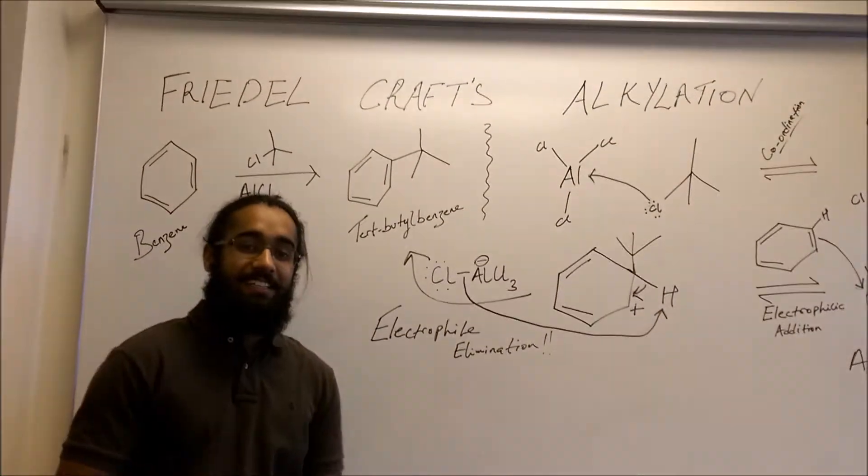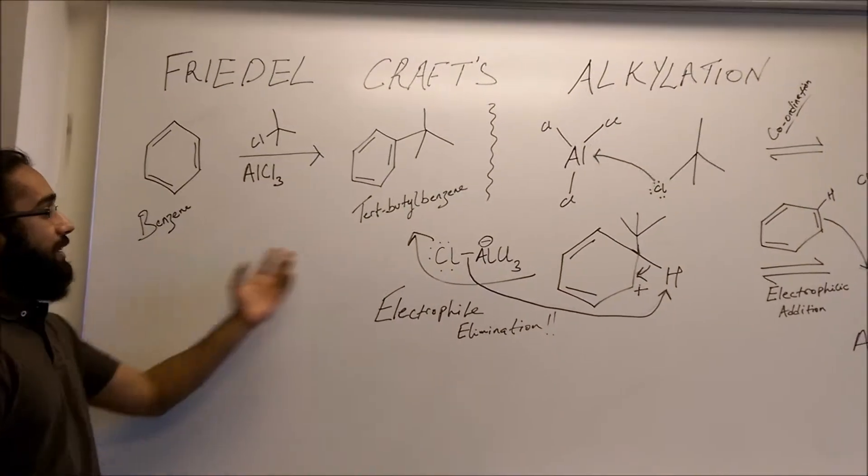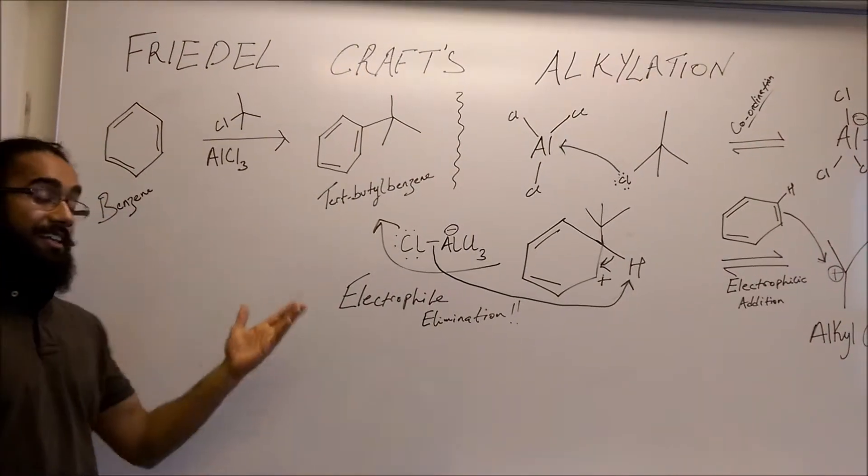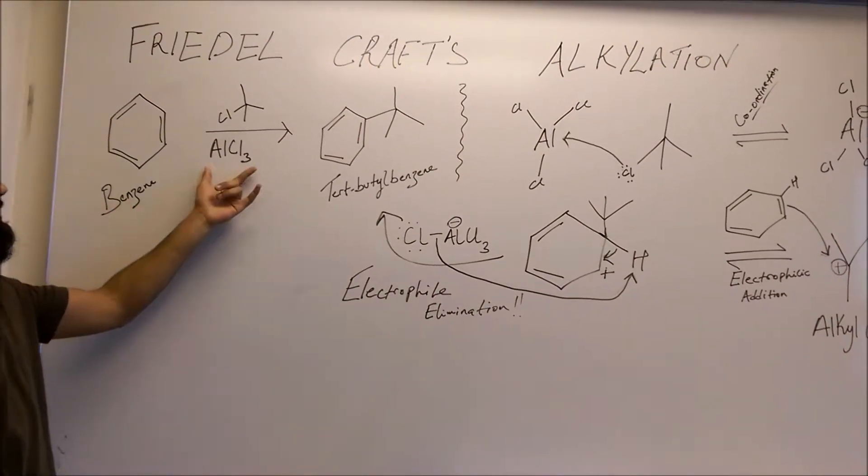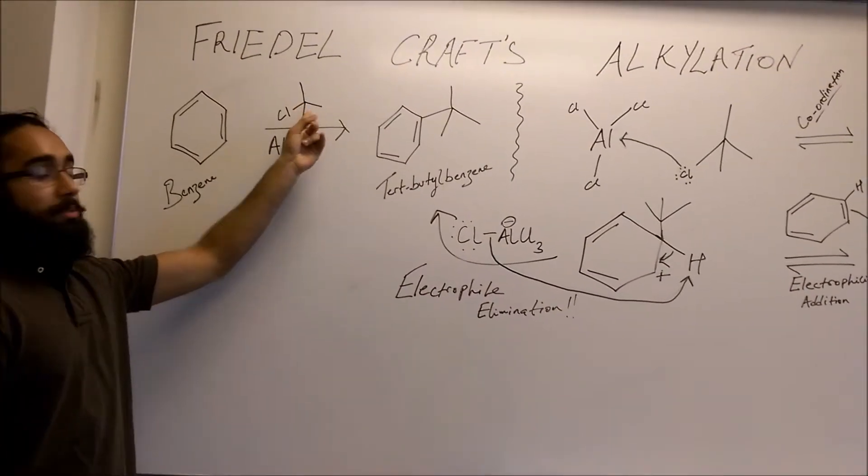So what we're doing here is the Friedel-Crafts Alkylation. We're starting off with a benzene, making a tert-butyl benzene, an alkylated benzene, using a Lewis acid and tert-butyl chloride.